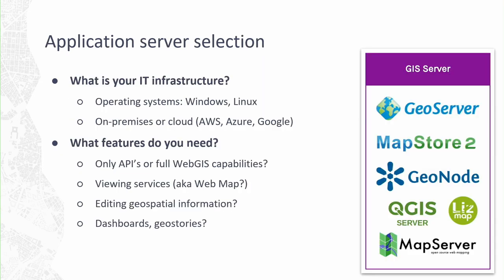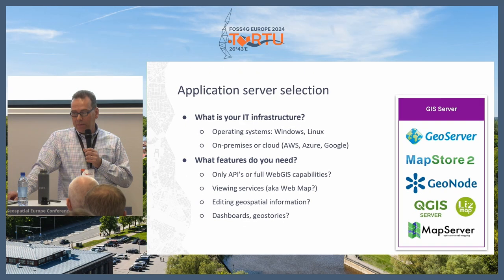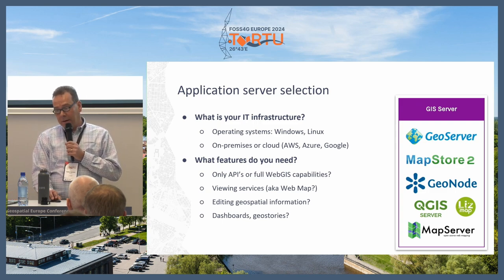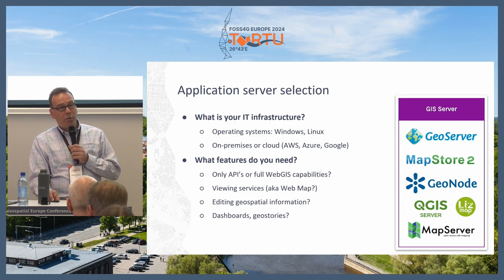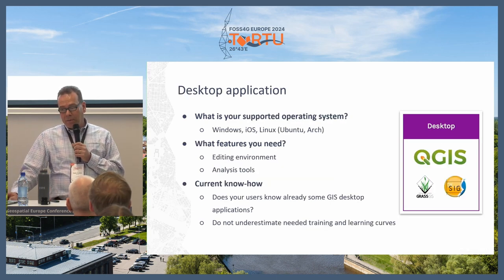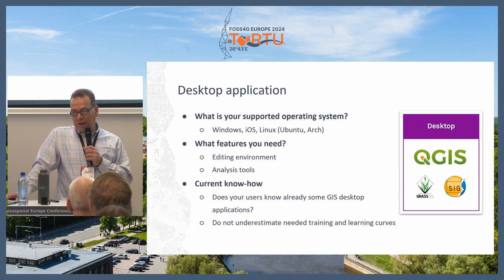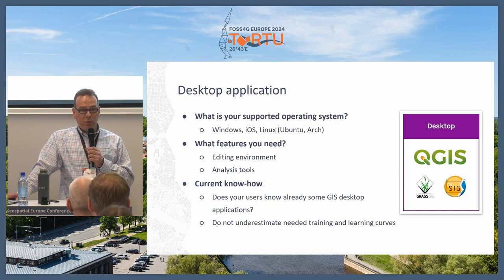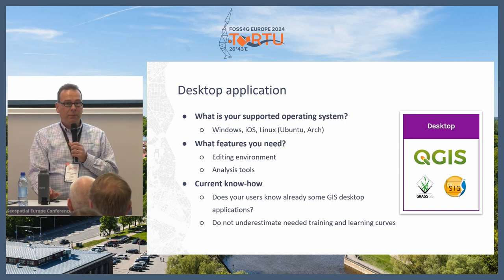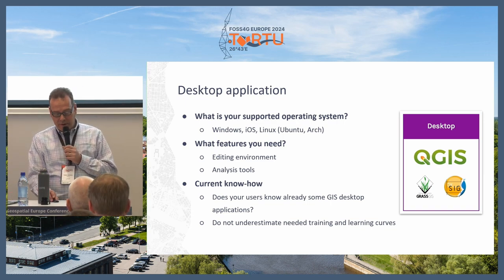For the application server, consider your IT infrastructure: Windows, Linux, cloud services, or on-premises. What kind of features do you need — APIs, web maps, dashboards, geo-stories? For desktop applications, consider operating systems, whether you need editing environment or analysis tools. Don't underestimate the need for training and learning curves if you change software from A to B.